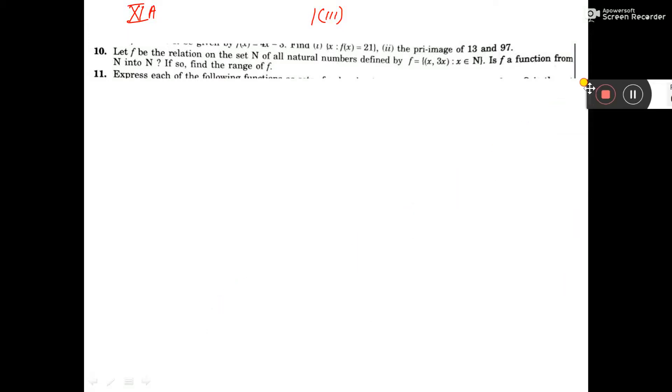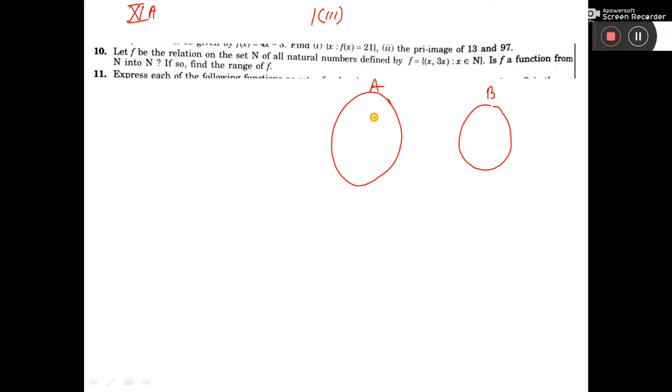Let us do problem number 10. Here I have drawn two sets, A and B. These are the elements of A and these are the elements of B. This is in terms of X, and X is an element of natural numbers.